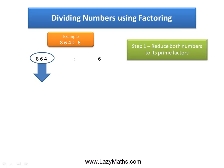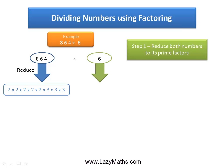The factors for 864 are 2 times 2 times 2 times 2 times 2 times 3 times 3 times 3. And the factors for 6 are 2 times 3.